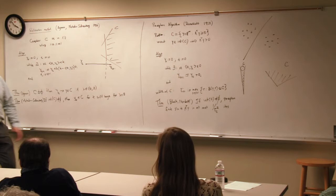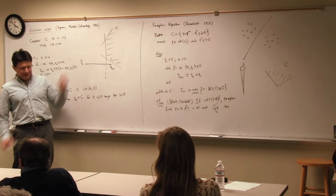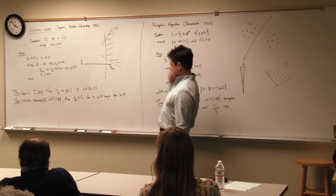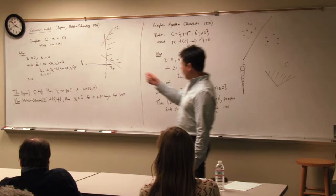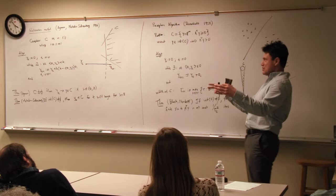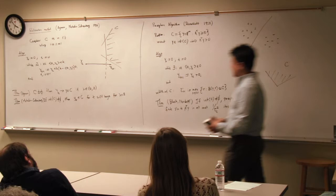The ellipsoid algorithm is an absolutely fundamental theoretical tool in optimization. Both the relaxation method and perceptron are like point estimates — we search for a point. The ellipsoid algorithm, by analogy, searches via confidence regions rather than just points.